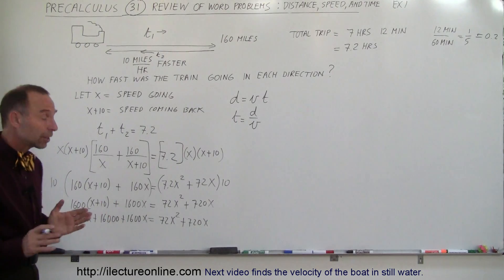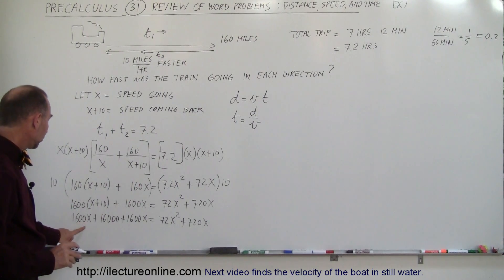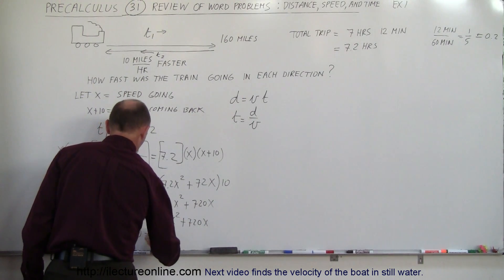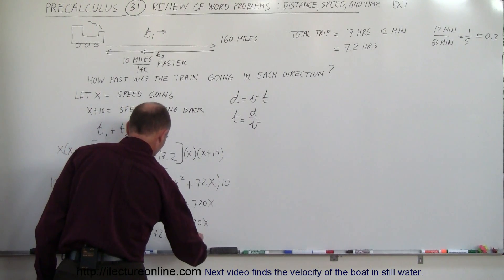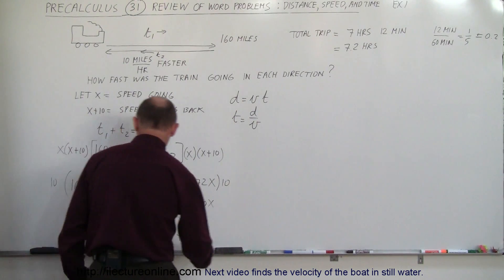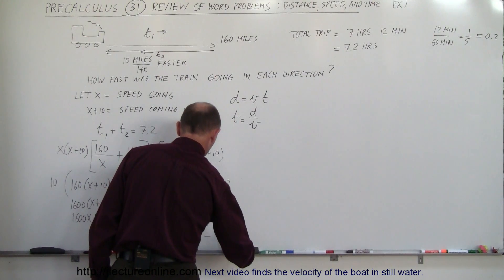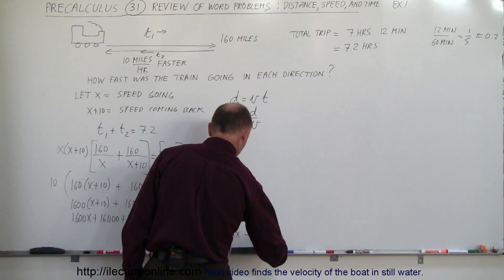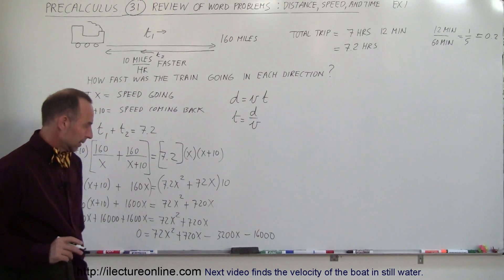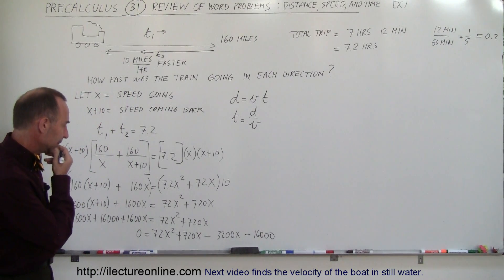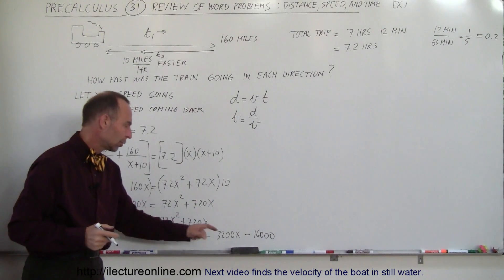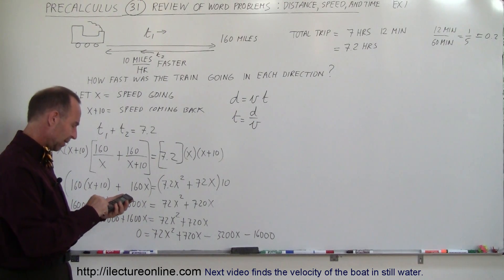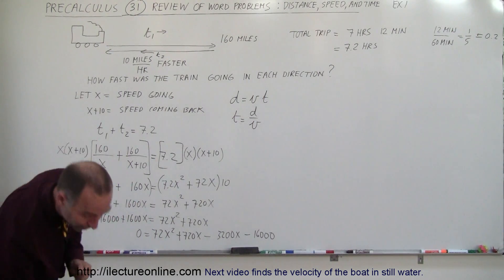That looks like a quadratic equation, so let's move everything over to one side. 1,600 plus 1,600 is 3,200. We'll move that across, so we have 0 equals 72x squared plus 720x minus the two combined, which gives us 3,200x, and then minus 16,000. I wonder if 72 divides into 3,200 and 16,000. 3,200 divided by 72 equals... Nope, it doesn't, so we'll just keep it as is.